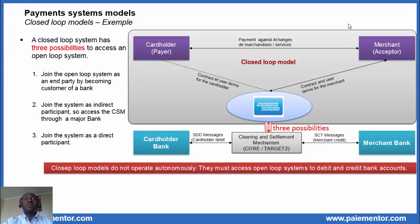Regarding the specificity of the Bitcoin system: in some countries, the Bitcoin system is a customer of many banks — that's how it gets access to open loop systems. It cannot become an indirect participant, at least not now, particularly in France. But perhaps things may change later. A key takeaway from this presentation is that closed loop models do not operate autonomously. They must access open loop systems to debit and credit bank accounts of the end parties.